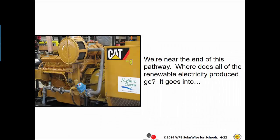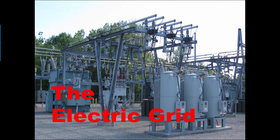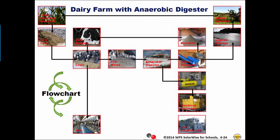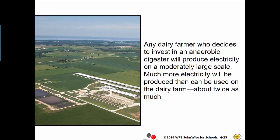We're near the end of this pathway. Where does all of the renewable electricity produced go? It goes into the electric grid. Any dairy farmer who decides to invest in an anaerobic digester will produce electricity on a moderately large scale. Much more electricity will be produced than can be used on the dairy farm — about twice as much.